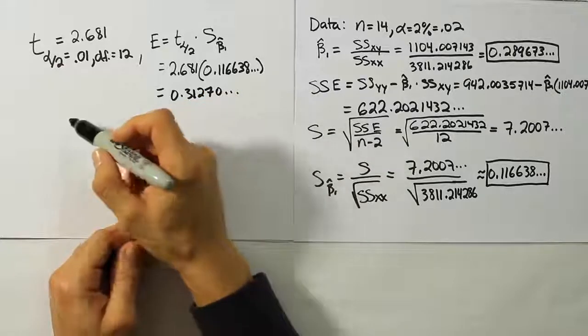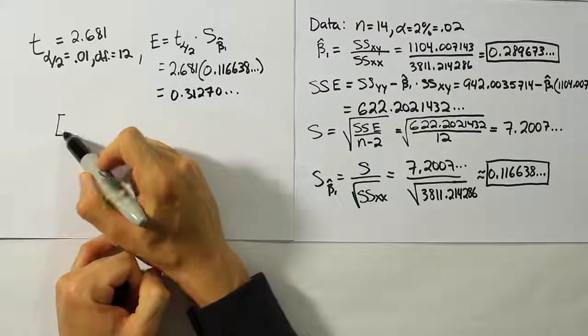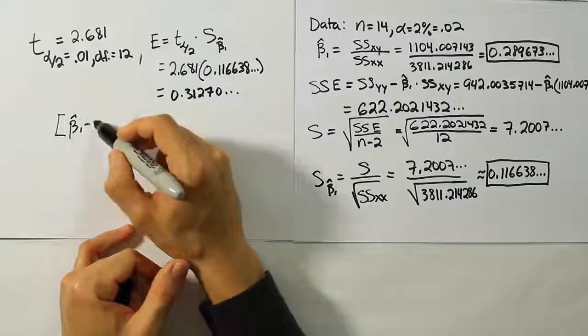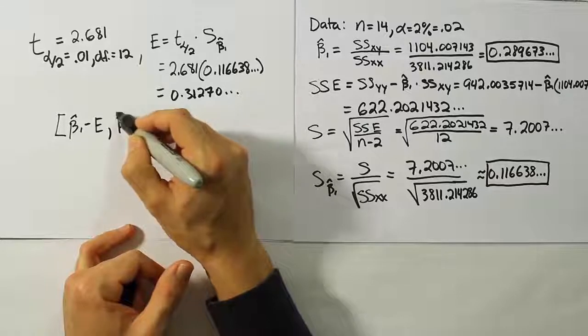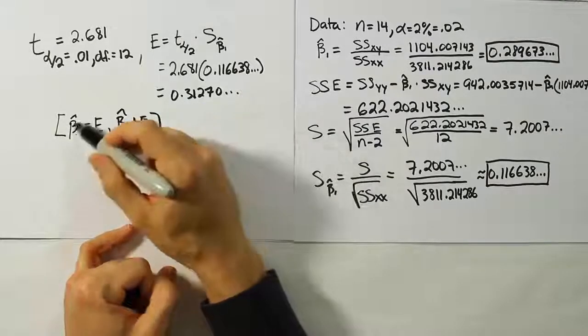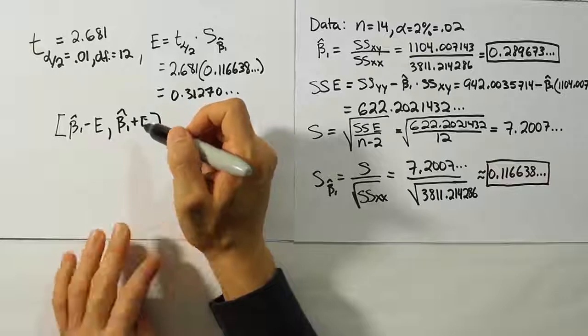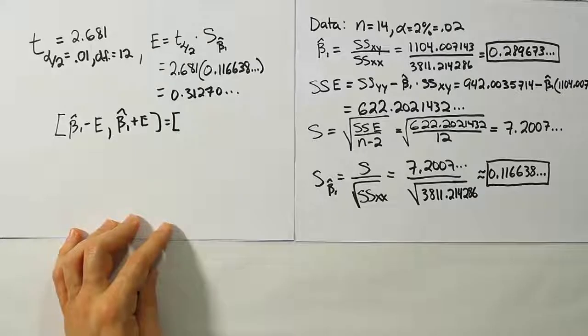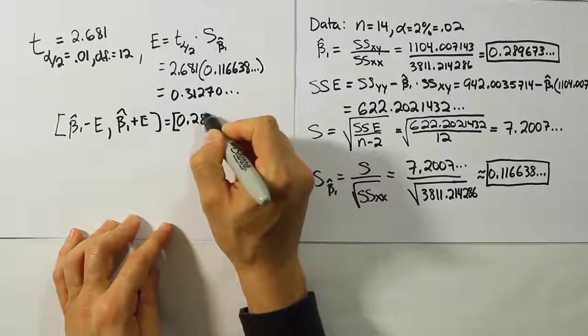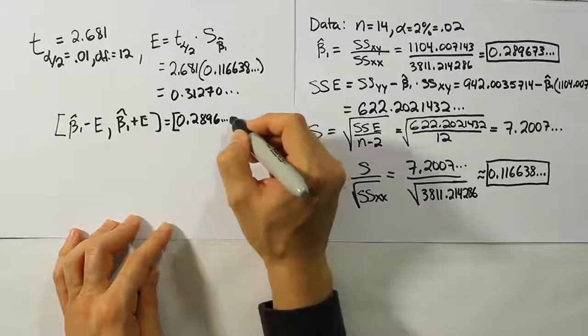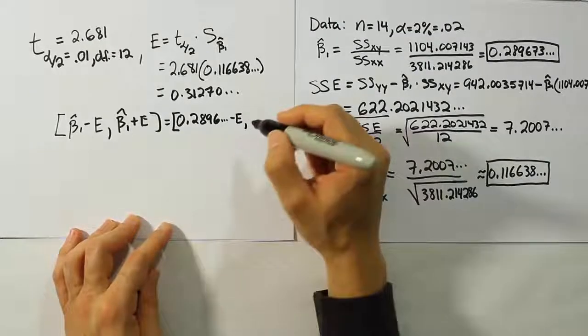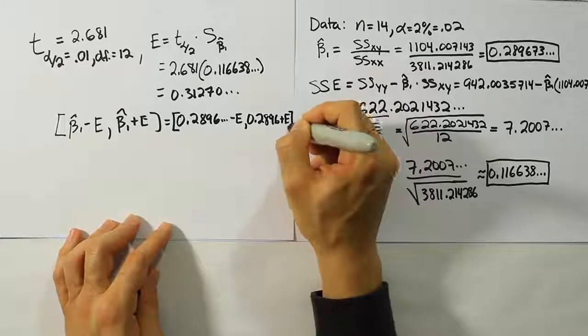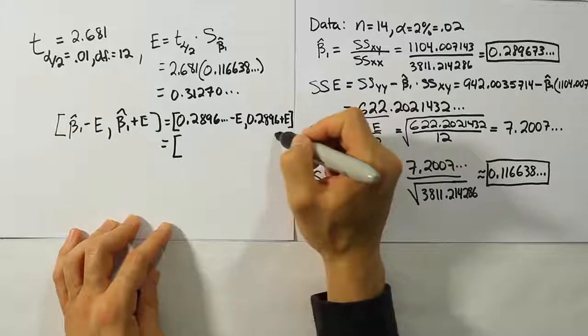Our next step is to plug that into my confidence interval for beta1. We're going to use beta1 hat as our point estimator, and then we'll do beta1 hat plus error on the other side. So beta1 hat minus error, beta1 hat plus the error. Let's see what that turns out to be for us. The beta1 hat value is 0.2896 minus the error, and then the same number, 0.2896 plus the error.